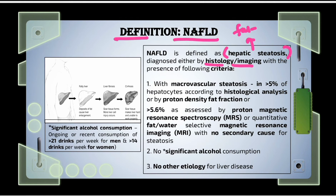The first criteria is that hepatocytes should show macrovascular steatosis in more than 5% of hepatocytes — meaning out of 100 hepatocytes, more than 5 should have macrovascular steatosis. This should be diagnosed by histological analysis or by the proton density fat fraction method.